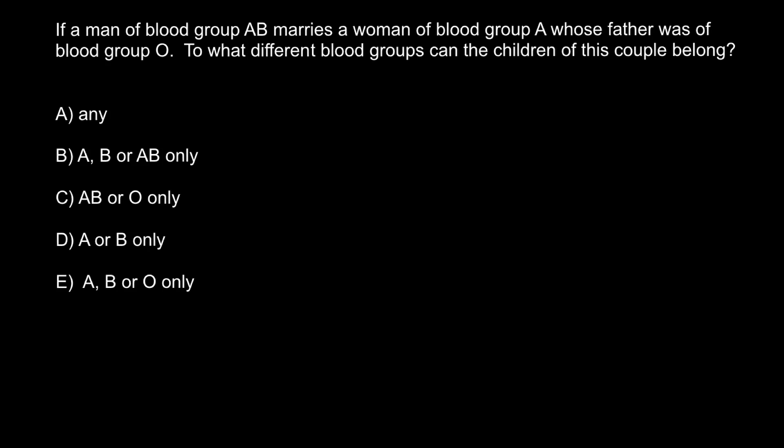Hello and welcome to Nikolai's genetics lessons. Today's problem would be about the ABO blood group system. Here's the problem: If a man of blood group AB marries a woman of blood group A whose father was of blood group O, to what different blood groups can the children of this couple belong? Here are the answers to choose from.